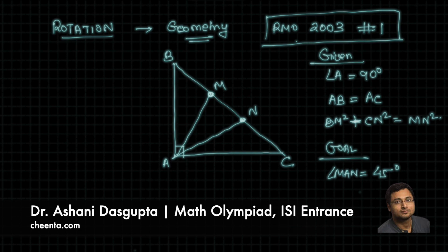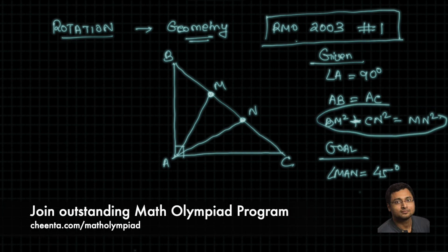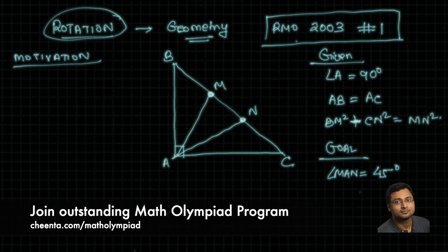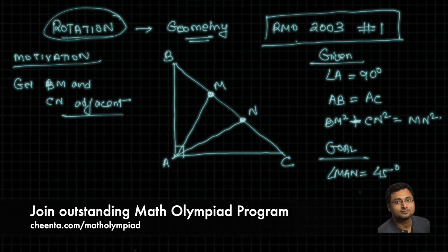How do we go about doing this? Of course, if you look at this particular expression, it immediately reminds you of Pythagoras theorem. So, if we can somehow get BM and CN adjacent to each other, if we can do that, then perhaps we can use Pythagoras theorem to get some sort of a structure. That's the motivation. So, the motivation behind rotation would be to get BM and CN adjacent and apply Pythagoras theorem.